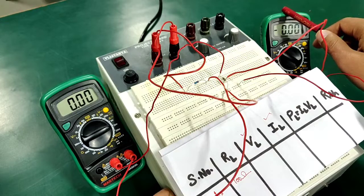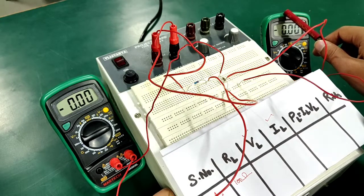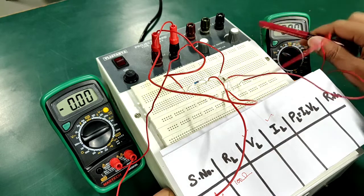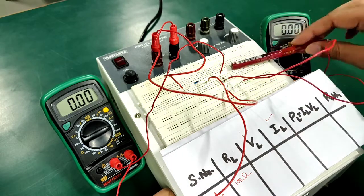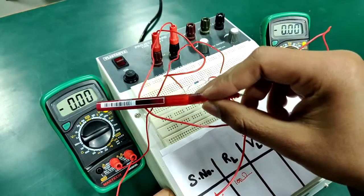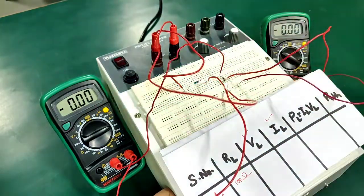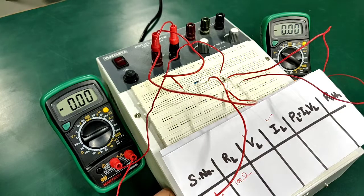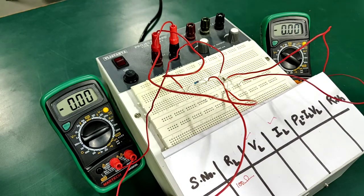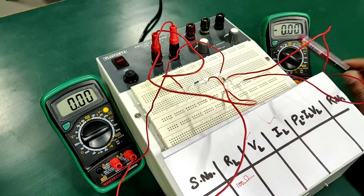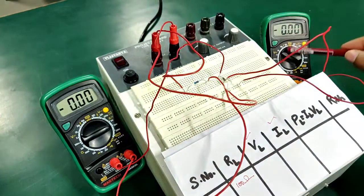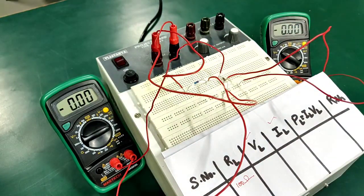And we'll have to evaluate VL and IL practically with the help of an ammeter and a voltmeter here. You can clearly see that this multimeter is acting as a voltmeter because it is being connected in parallel to RL, and this multimeter is being connected in series with the RL therefore it will be giving us the value of load current through this resistor. And also the dials of multimeter have to be set to current as well as voltage positions respectively.